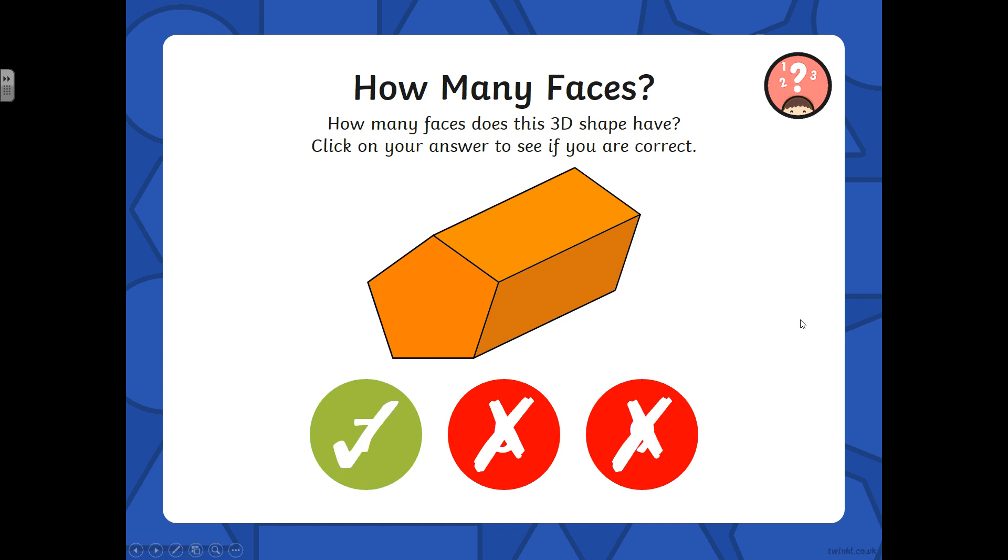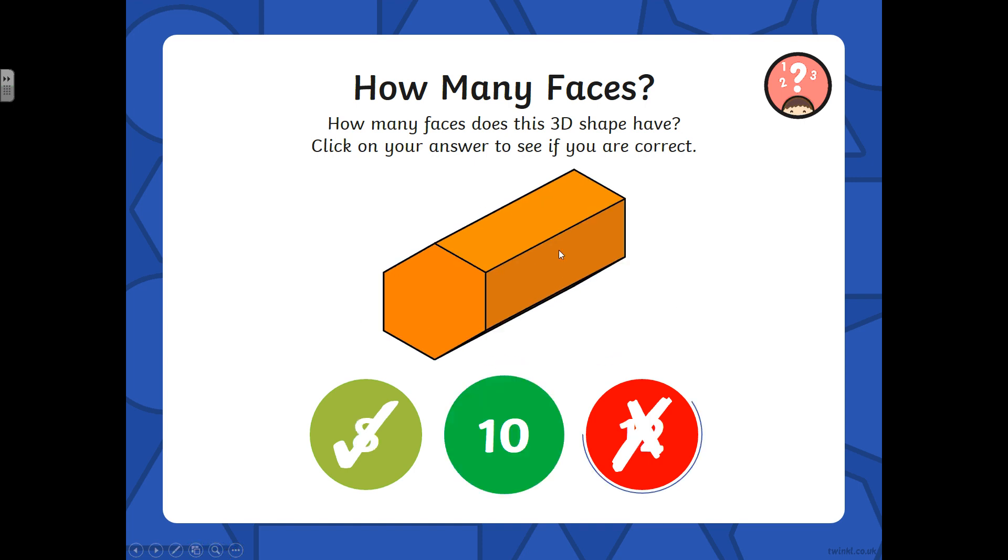Yep, it's 7: 1, 2, 3, 4, 5, 6, 7. What type of prism is this? What type of shape is this, the face? And that will tell you what type of prism it is.